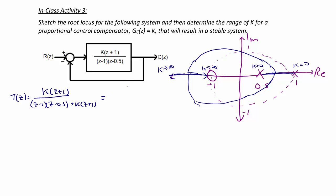And this simplifies to k times z plus 1 over z squared plus the quantity k minus 1.5 z plus k plus 0.5. So then t of z, using our bilinear transformation, is t of z where z is equal to z plus 1 over z minus 1.